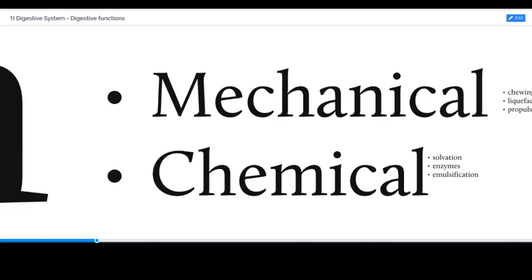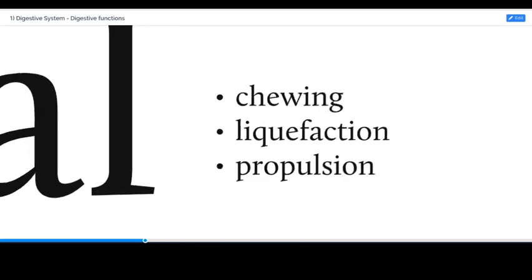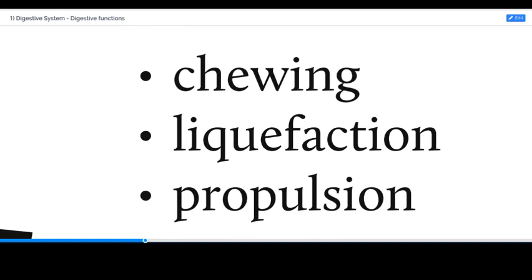Then chemical digestion, which is to get the food into solution and down to the nutrient molecule parts that we need to get into our body. This list represents three of the main examples of how we mechanically digest food.